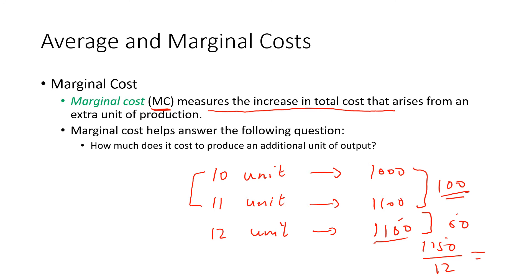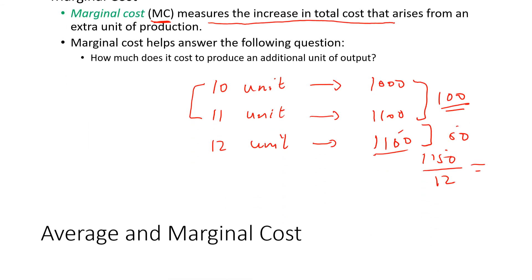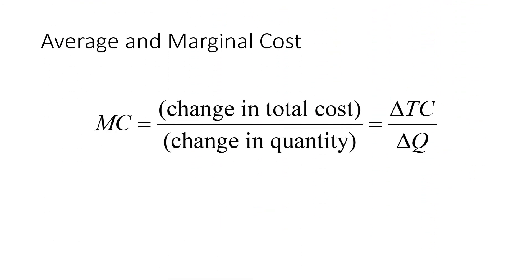Marginal cost helps us answer: how much does it cost to produce an additional unit of output? We find marginal cost using the formula: MC = ΔTC / ΔQ. In our example, moving from 10 to 11 units, the change in cost was 100 rupees, so 100 divided by 1 equals 100.